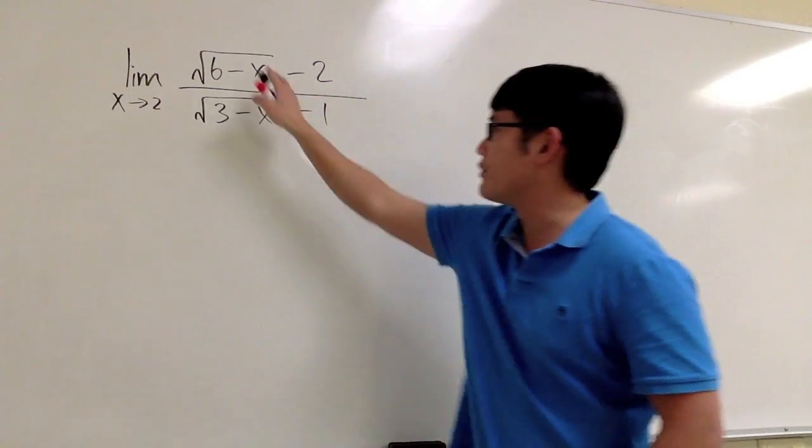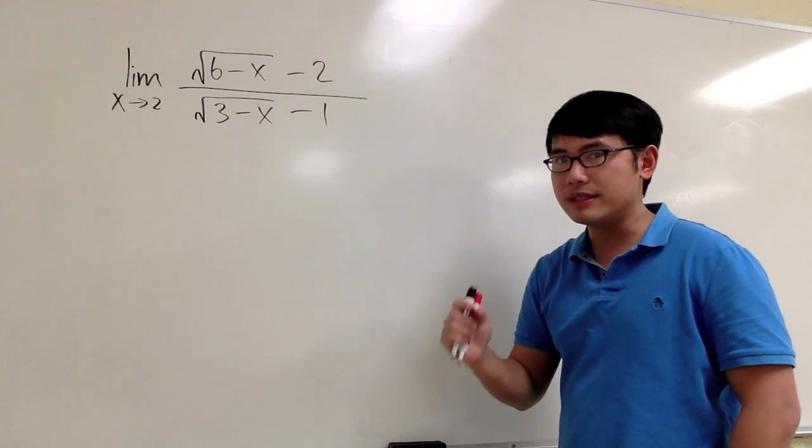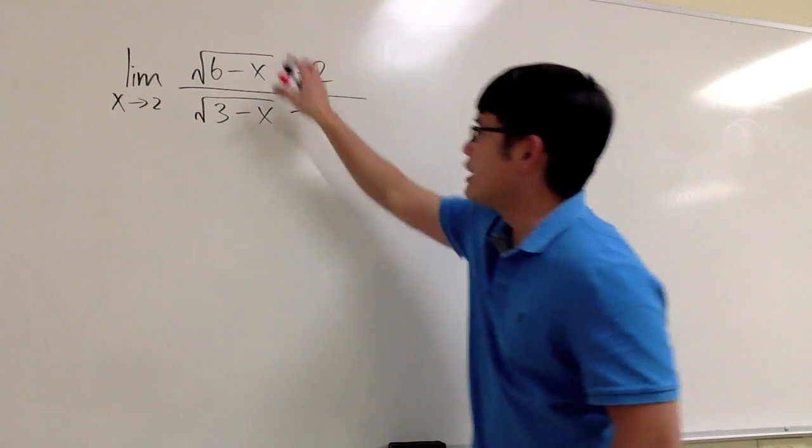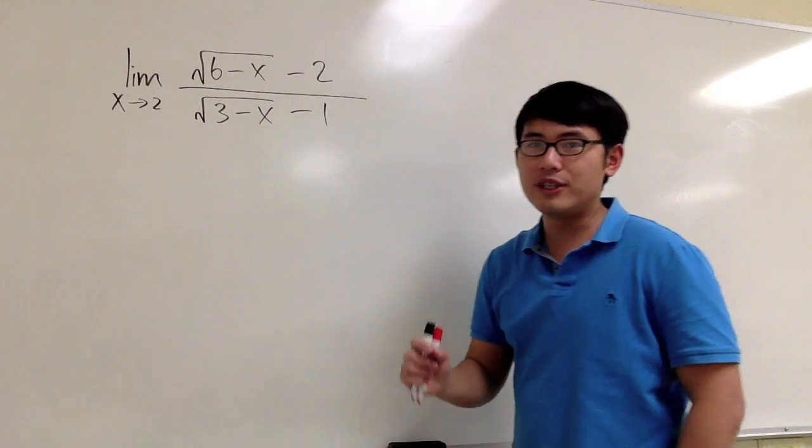Notice that here we have two square root situations, and the way that we are going to do it is, as usual, we are going to use the conjugate. However, because there are two parts, we are going to use the conjugate twice.